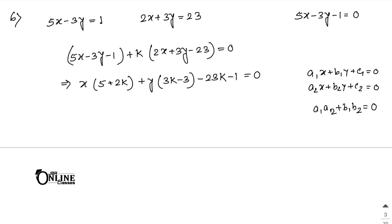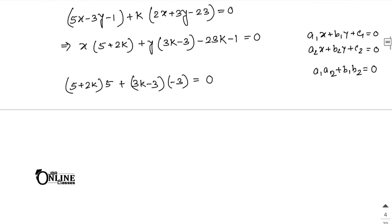So in that case, you can write down: 5 plus 2k multiplied by 5, then 3k minus 3 multiplied by minus 3, equal to 0. Multiplying out: 25 plus 10k, then minus 9k plus 9, equal to 0. So k plus 25 plus 9 equals 0, that is k plus 34 equals 0, meaning k equals minus 34.